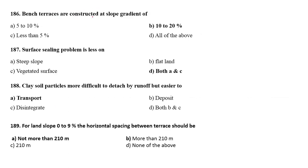Bench terraces are constructed at slope gradient of 10 to 20 percent. Surface sealing problem is less on both steep slope and vegetated surface.